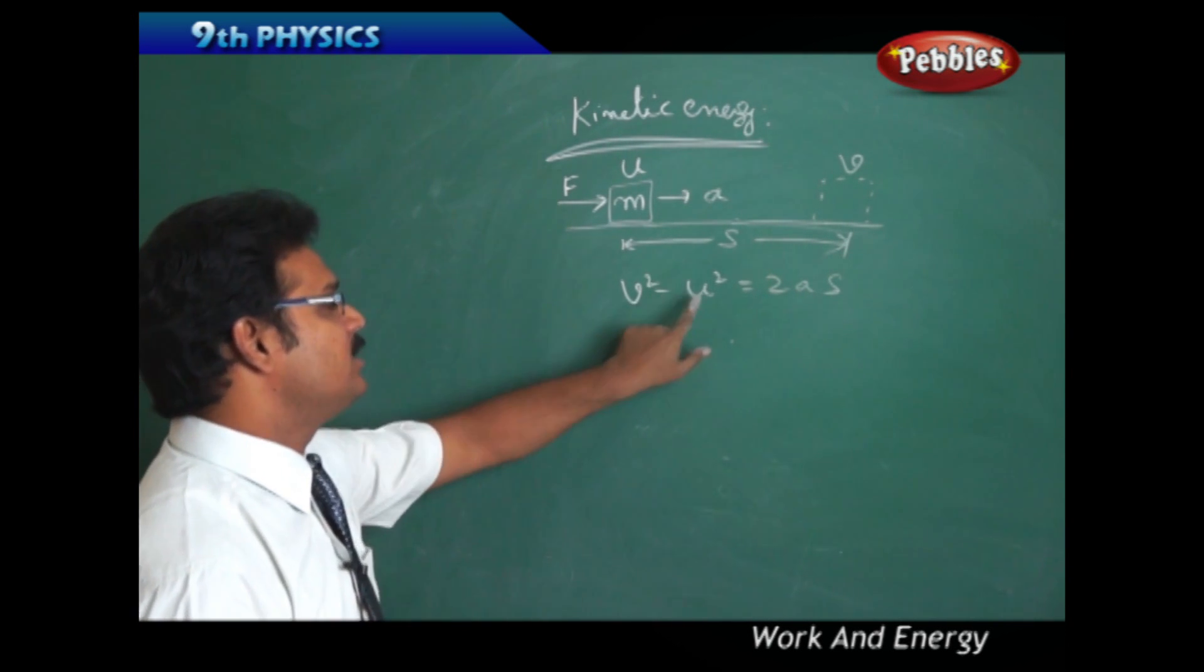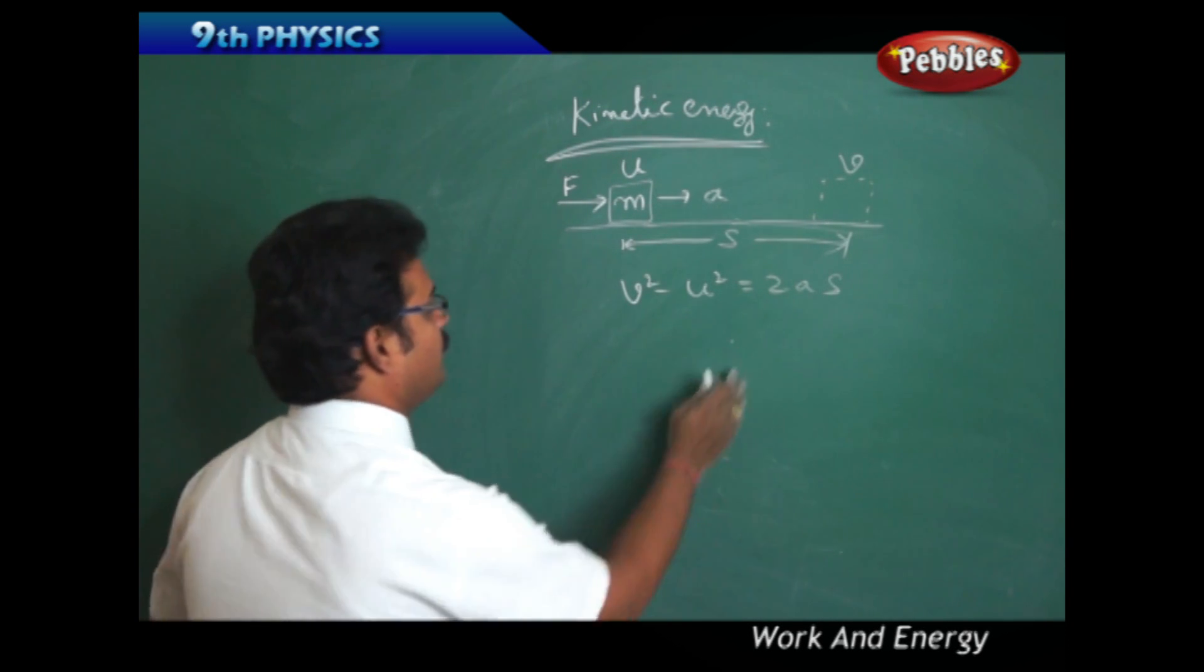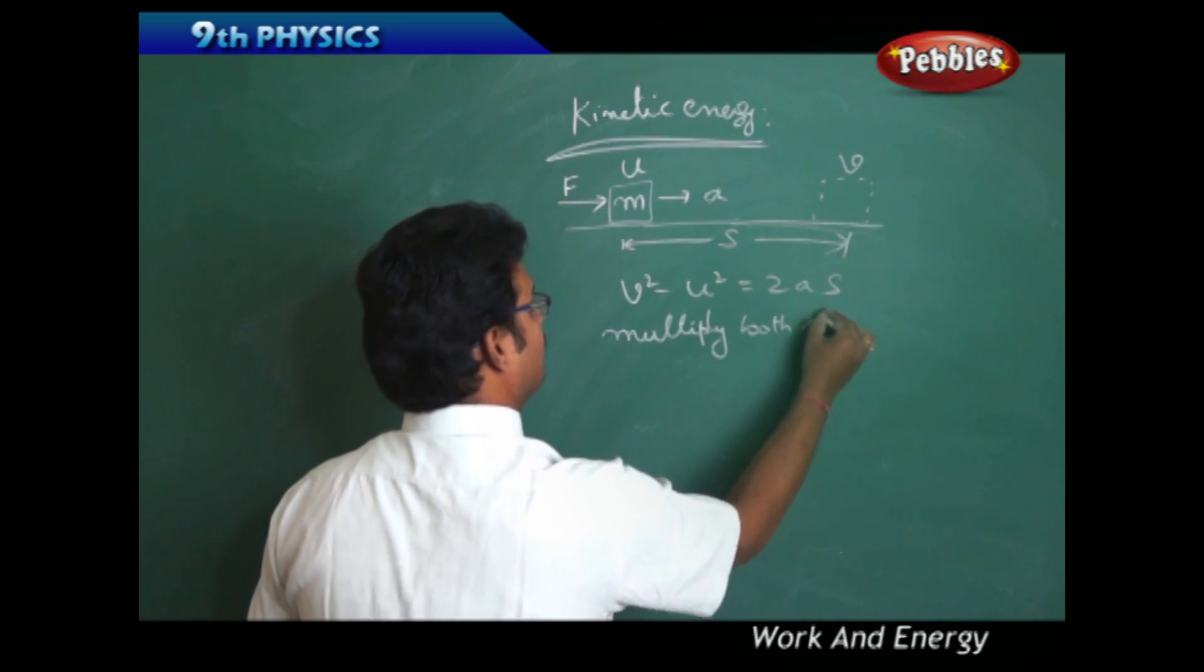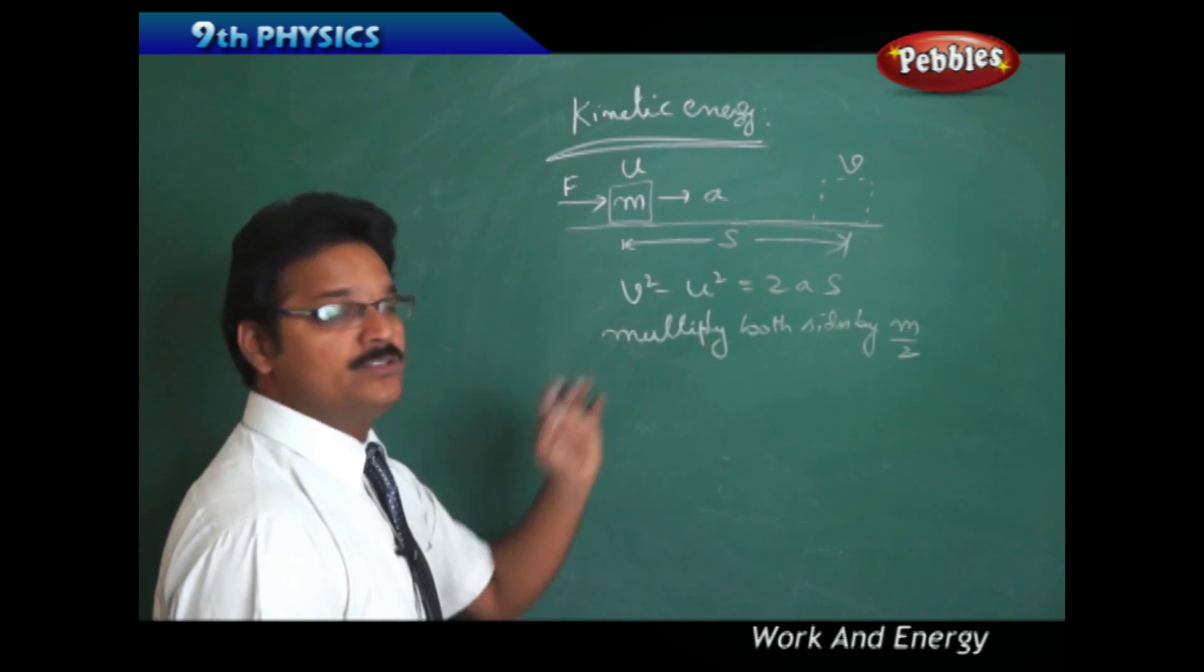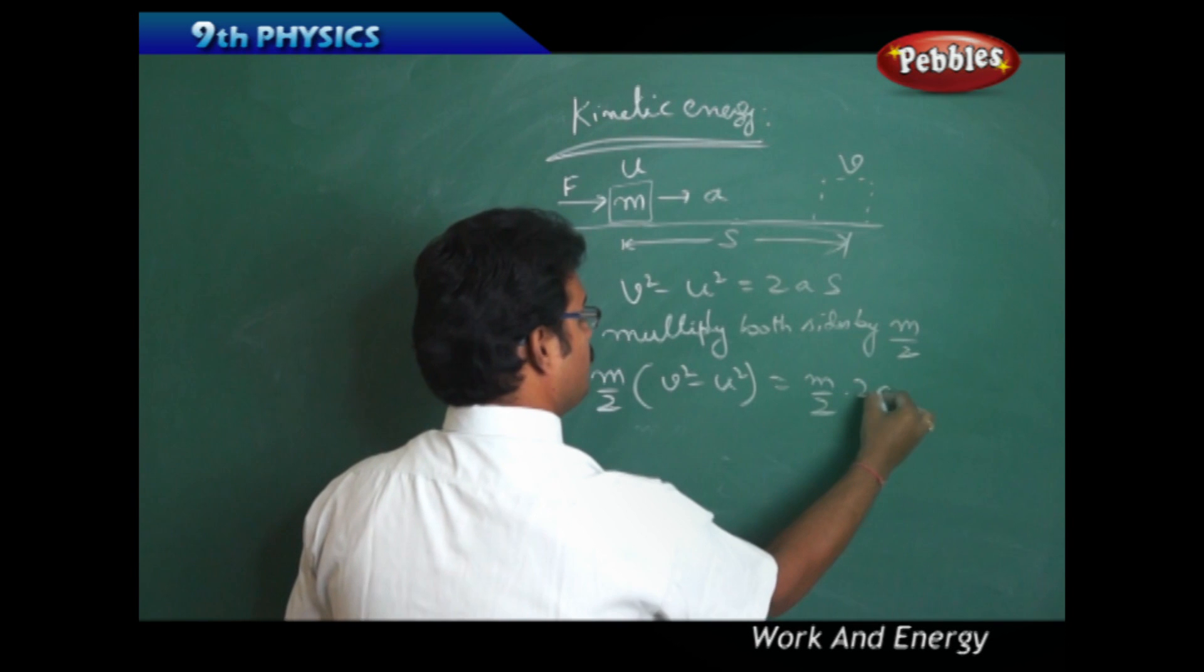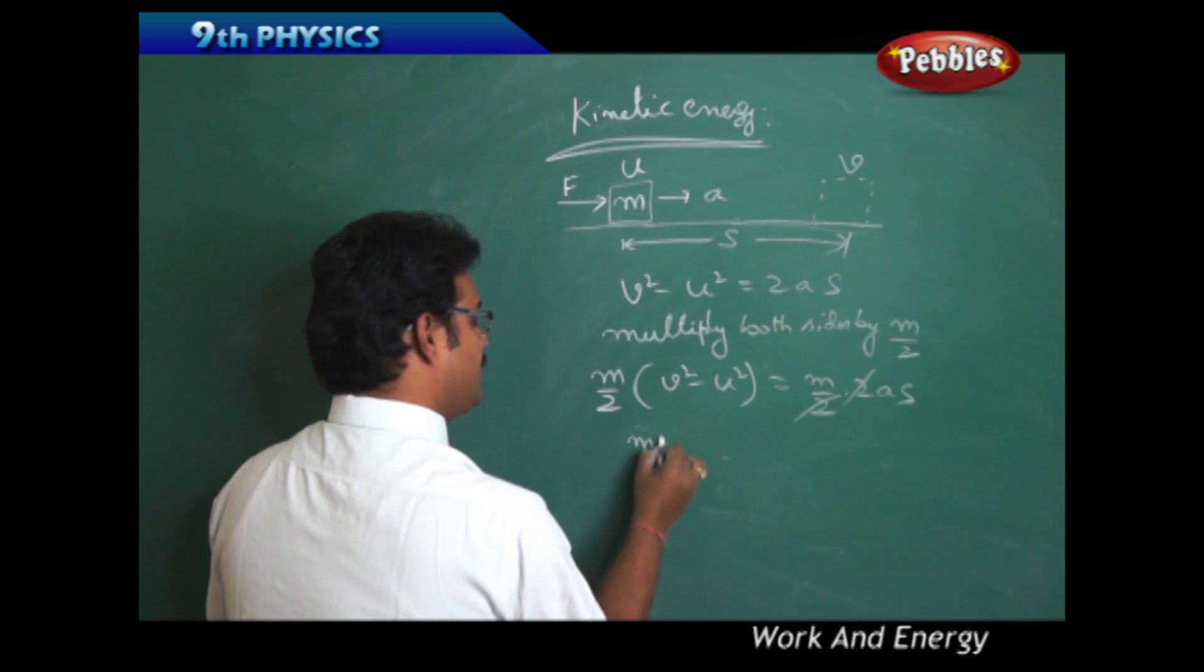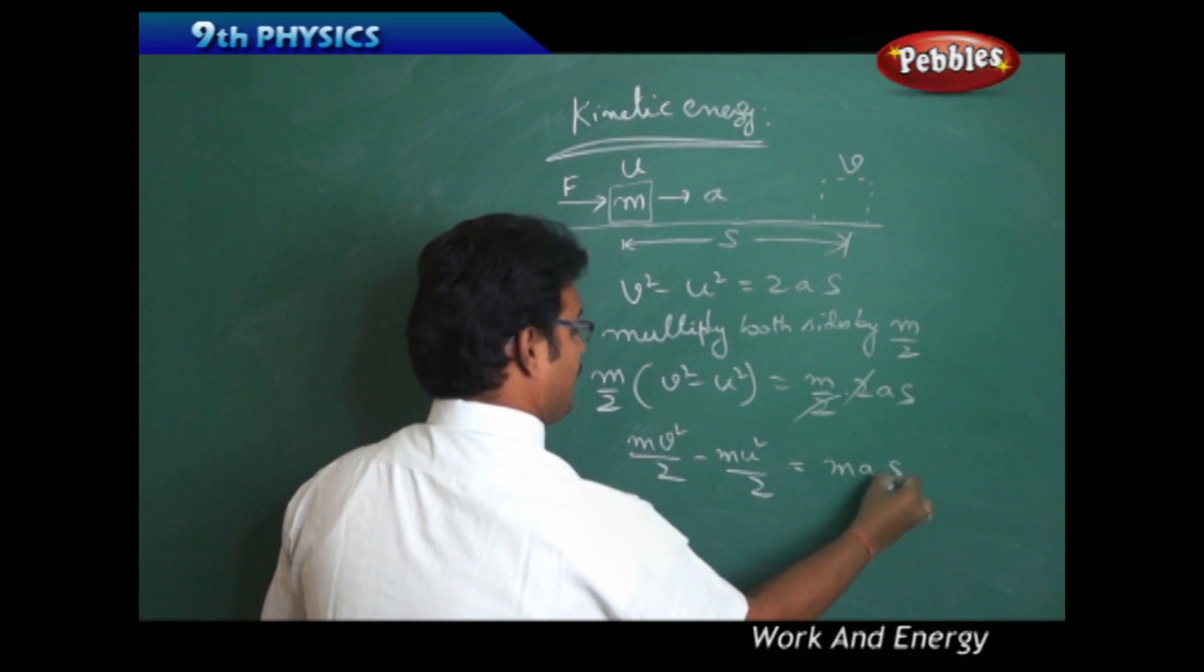V is the final velocity, U is the initial velocity, a is the acceleration, S is the displacement. Now, multiply both sides by M/2, so that equation should not change. M/2(V² - U²) = 2(M/2)aS. Here 2 and 2 is cancelled. M/2 goes inside: MV²/2 - MU²/2 = MaS.